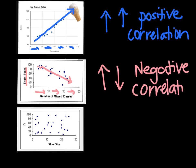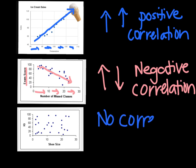The third type — this one shows your shoe size and your IQ. If you look at the points, they are just scattered everywhere. There doesn't seem to be any kind of pattern. I could not draw a fitted line through these points. So this one is called no correlation. There is no relationship between the two sets of data — no relationship between your shoe size and your IQ.